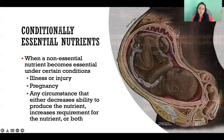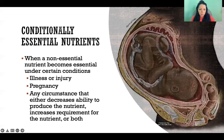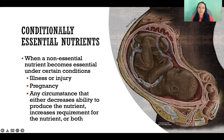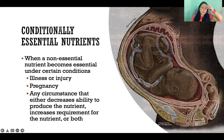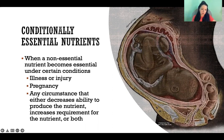So a conditionally essential nutrient is when we have a non-essential nutrient — meaning that we produce it in the body — but if for some reason we're not producing enough to meet our current demands, then under those conditions it becomes essential. That's a conditionally essential nutrient. Non-essential nutrients we really never have to think about unless we are under certain conditions where it becomes essential and we have to get it from the diet.